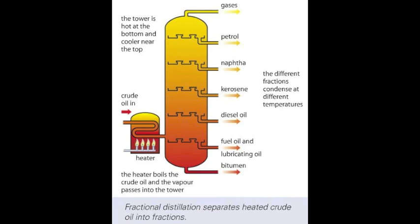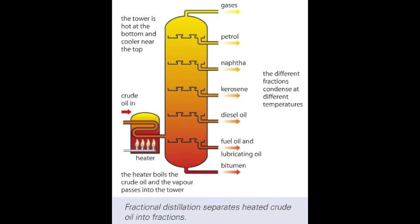For example, all the hydrocarbons in the petrol fraction have five, six, or seven carbon atoms per molecule. Crude oils obtained from different parts of the world contain different percentages of the different fractions. This makes some crude oils more valuable than others.